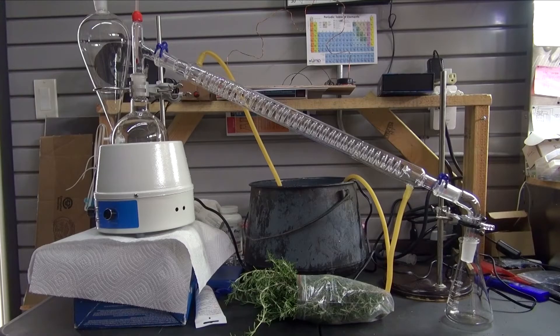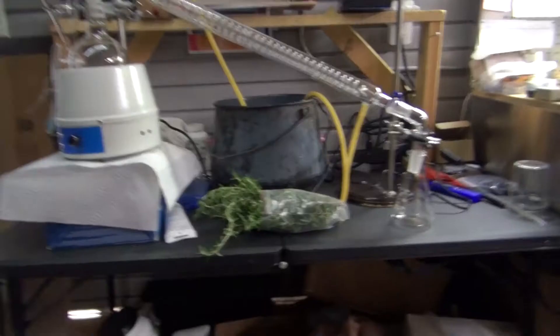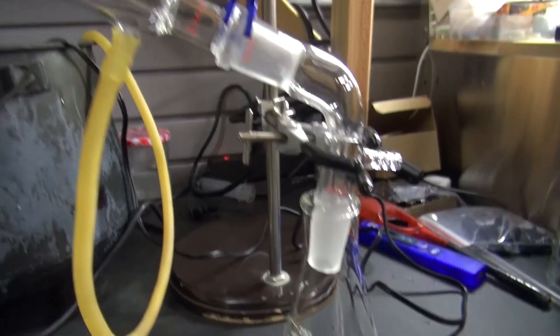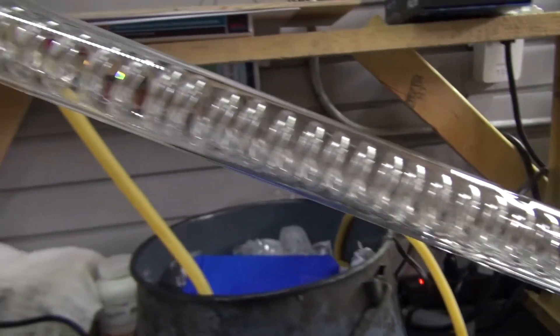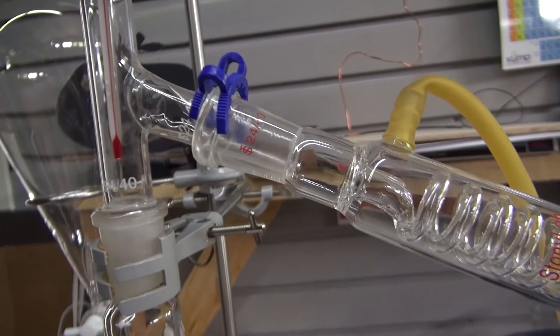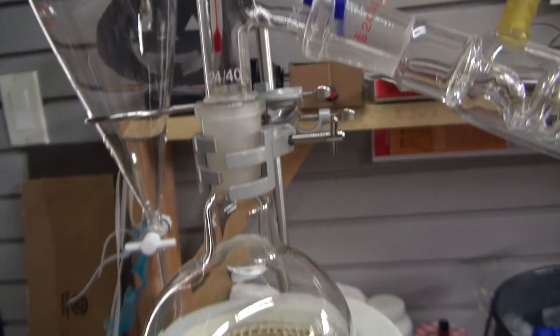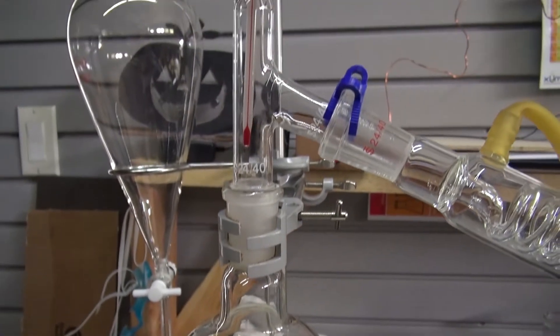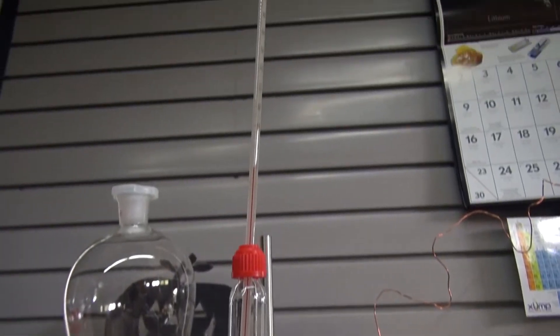These are the items you're going to need for this project. You'll need an Erlenmeyer flask connected to a vacuum takeoff joint connected to a Graham condenser connected to a thermometer joint connected to a Florence flask, and of course a thermometer to measure your steam.